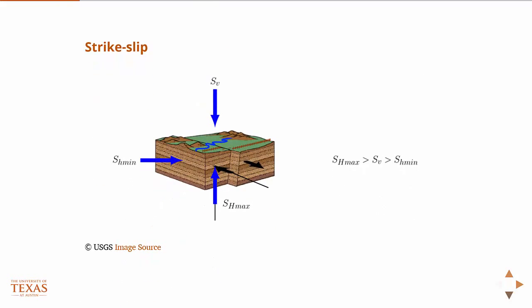And so then the third case is the strike slip fault. In this case, the vertical stress is in between the maximum and minimum horizontal stresses. And I had to put these blue vectors on here, and it was a little bit difficult to do it in such a way.